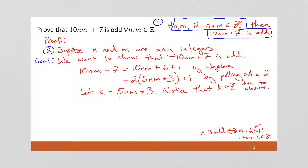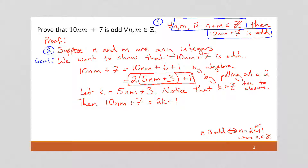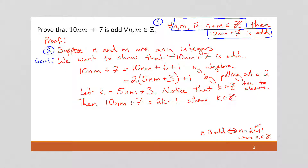There are your closure properties: here we have multiplication and addition of integers, and we know that integers are closed under both multiplication and addition. Okay, once this has a name, then I can go back and say that what I'm starting with — 10nm plus 7 — can be rewritten as 2k plus 1. Where k is an integer. It may seem like we're harping on this fact, but that's really important, because if k weren't an integer, the entire proof would fall apart. So in a sense, the fact that k is an integer is the focal point of this proof.